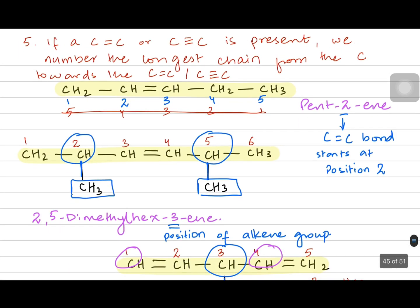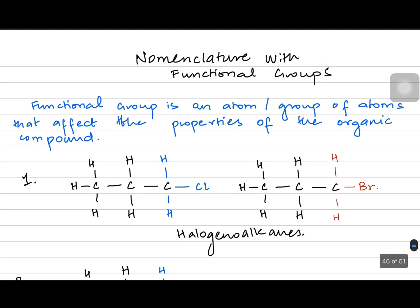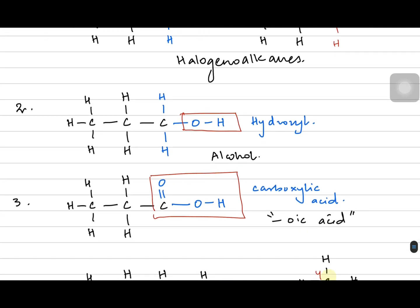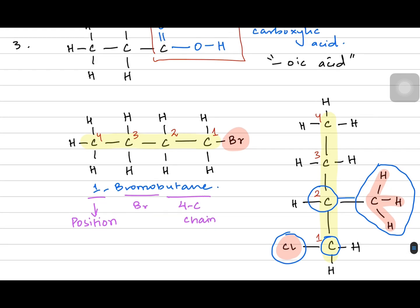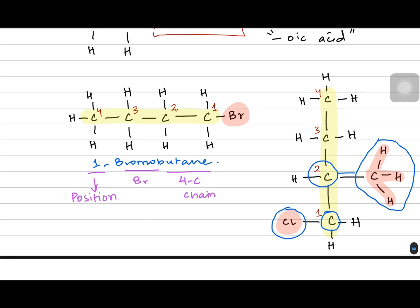Then we looked at the numbering of alkenes and alkynes, where the position of the carbon-carbon double bond or carbon-carbon triple bond is mentioned before 'alkene' or 'alkyne'. Then we started the naming of functional groups. We knew there was a halogenoalkane, which was chloro, bromo, or iodo. Then we did some examples of alcohols, which have the hydroxyl functional group. Carboxylic acids have the carboxylic acid group and their name ends with 'oic acid' — for example, one carbon would be methanoic acid, two carbons would be ethanoic acid, and so on.